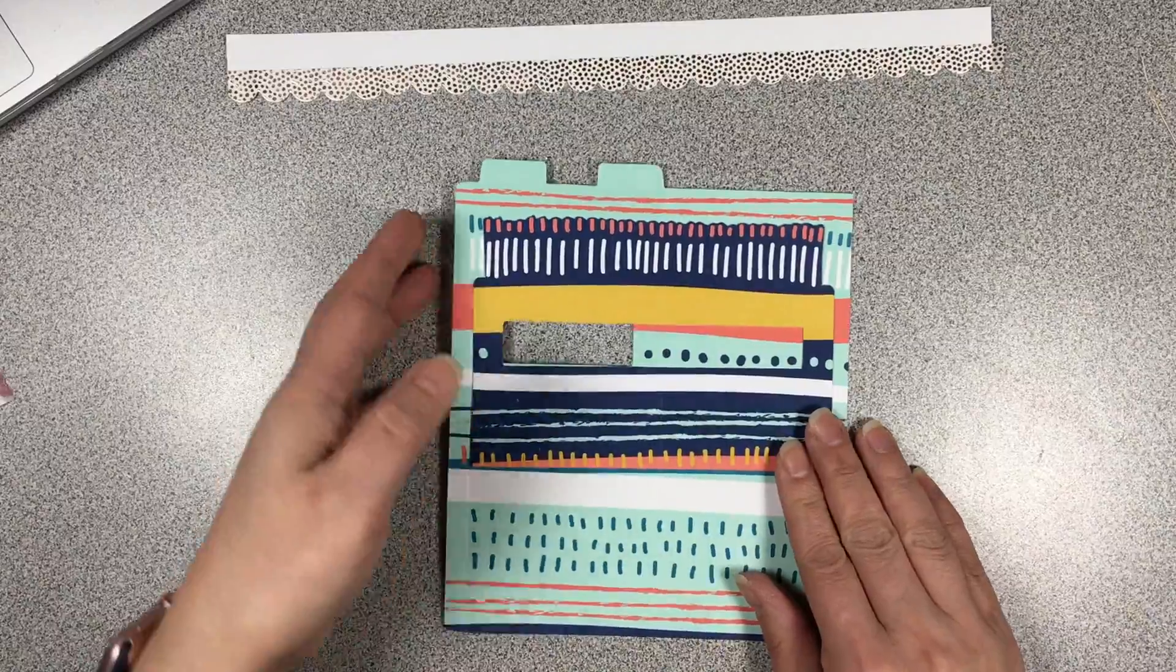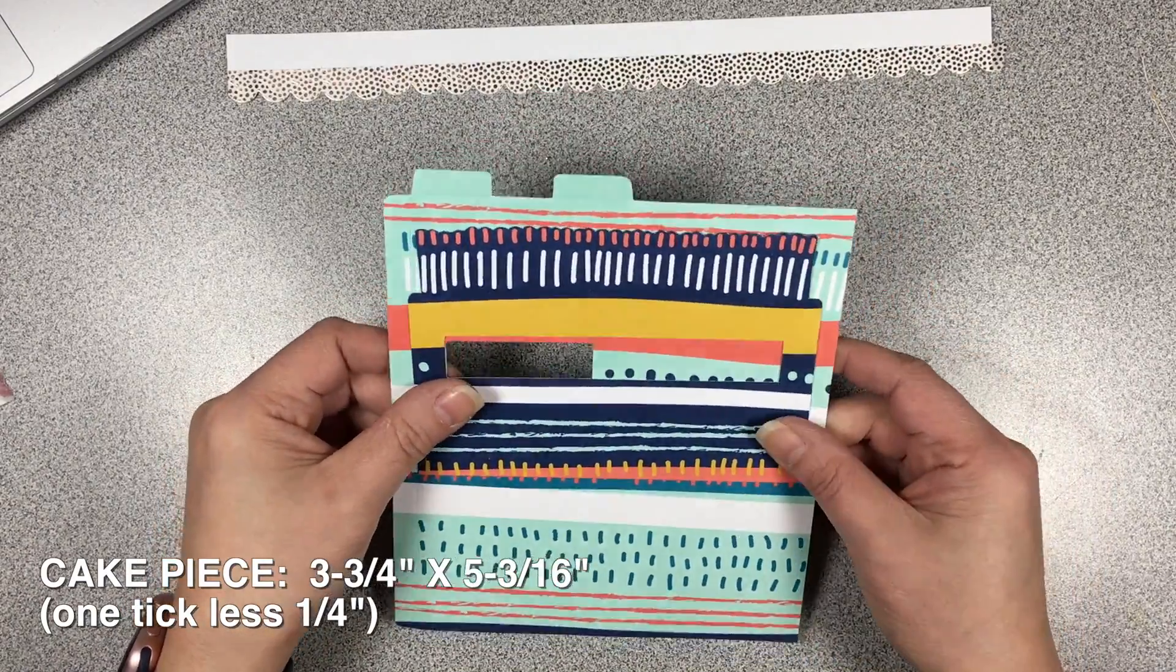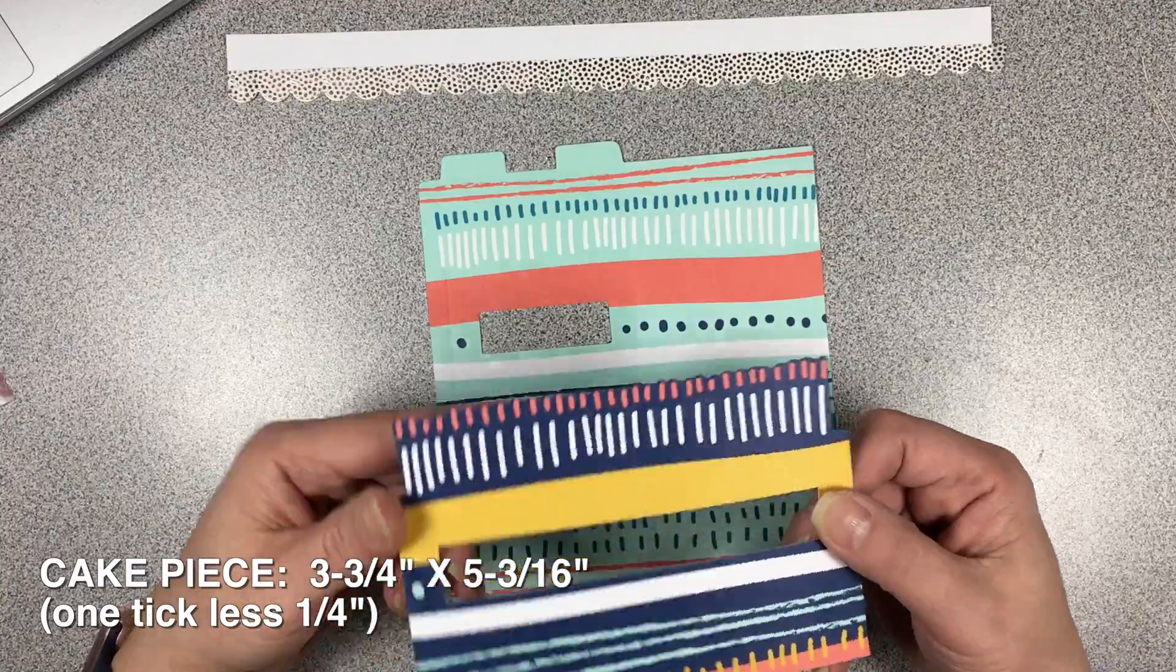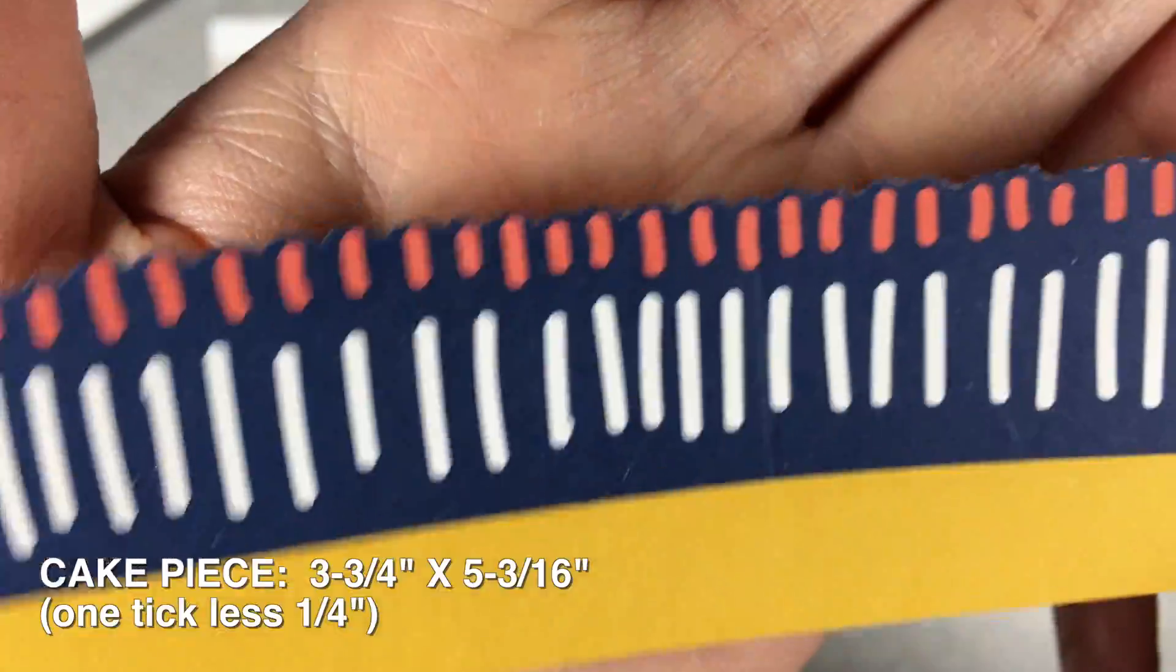I've put it over top of a new panel from the kit just so you can see the outline of it. The cake piece is cut out at three and three-quarter inches by five and three-sixteenths.